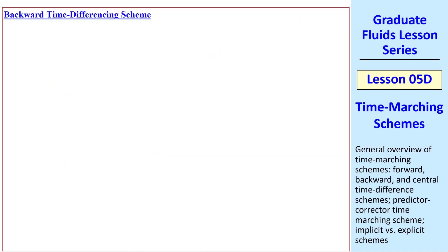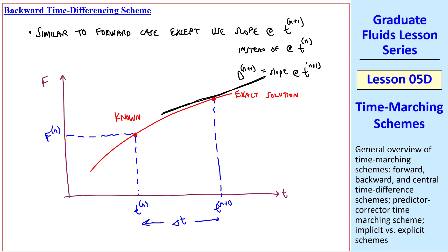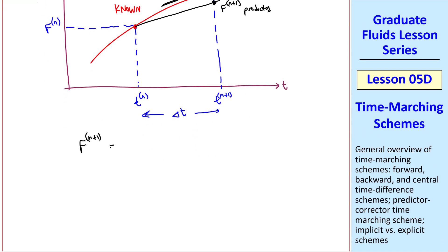Let's try instead a backward time differencing scheme. It's similar to the forward case, except we use the slope at the next time step, tn plus 1, instead of at tn. Again, let's illustrate this graphically. Instead of taking the slope here, we take it here. This is dn plus 1, which is the slope at tn plus 1. We use that slope to extrapolate to our predicted value, fn plus 1. Mathematically, we write fn plus 1 equal fn plus dn plus 1 delta t.